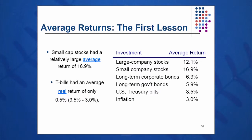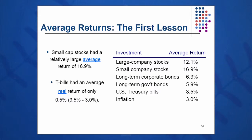In Ibbotson and Sinkfeld's study, we see that large company stocks on average — if you slice through all those data points we looked at on a prior slide — the average for large company stocks is about 12.1%. These are your IBMs, GMs, companies like that. They measure these each and every year, and they will get you 12% if history repeats itself, based on what it's done over the last 85 to 90 years.